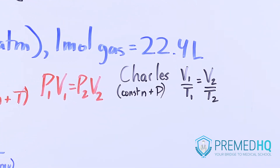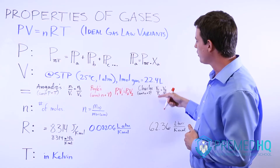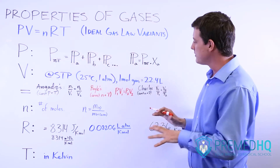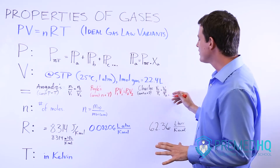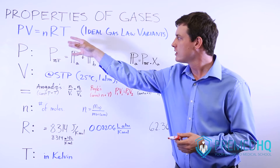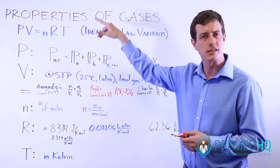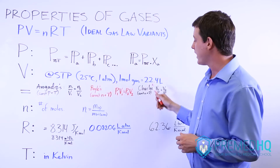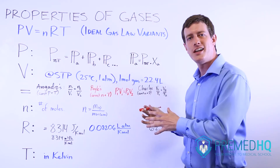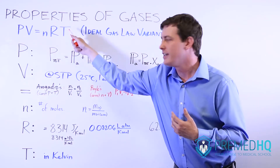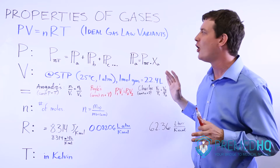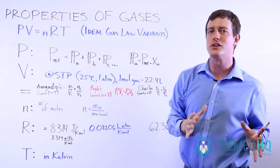Charles's law says the relationship between volume and temperature is directly proportional if you keep the number of moles and pressure constant. So if pressure and moles are fixed and temperature increases, volume also increases. Avogadro's, Boyle's, and Charles's laws can either be memorized individually, or you can simply remember PV=NRT and work out what must change when certain variables are held constant. They are all just variations of PV=NRT.